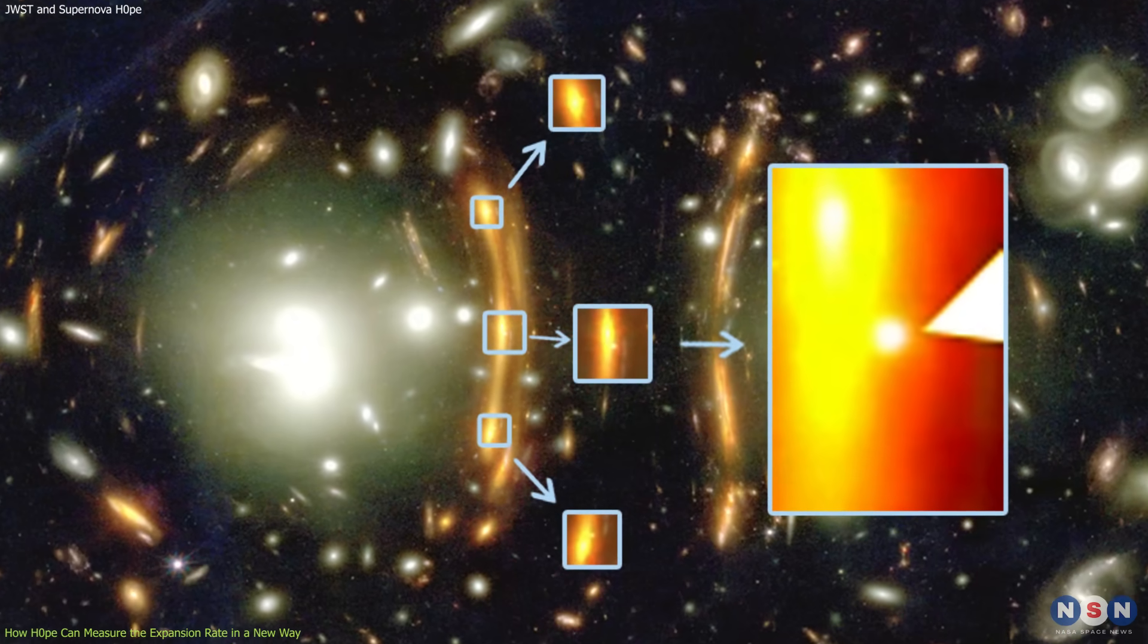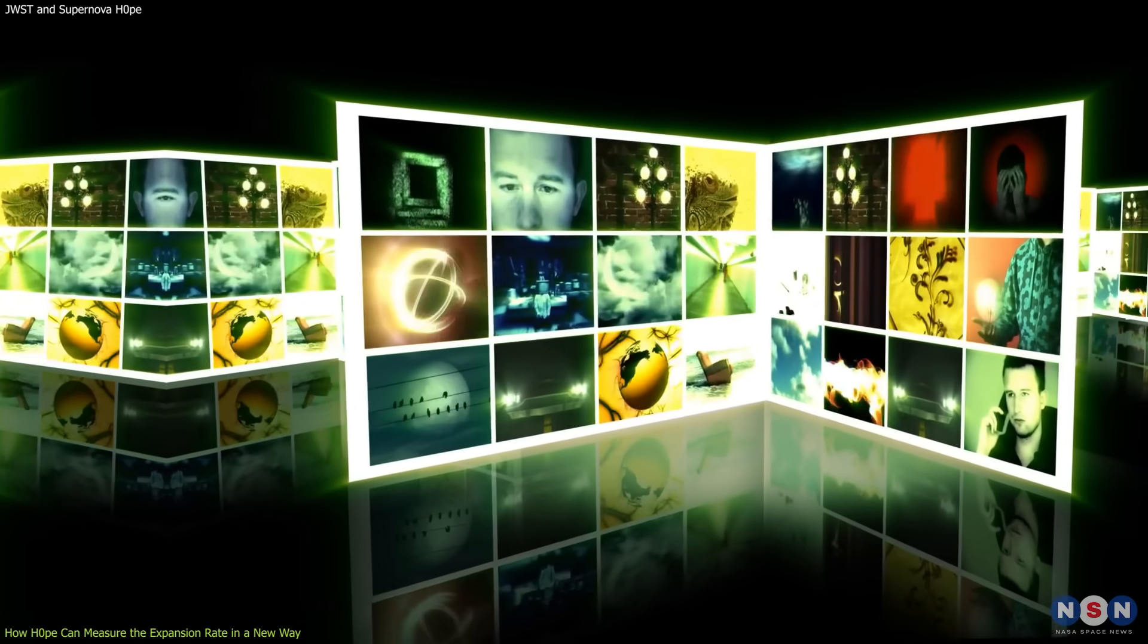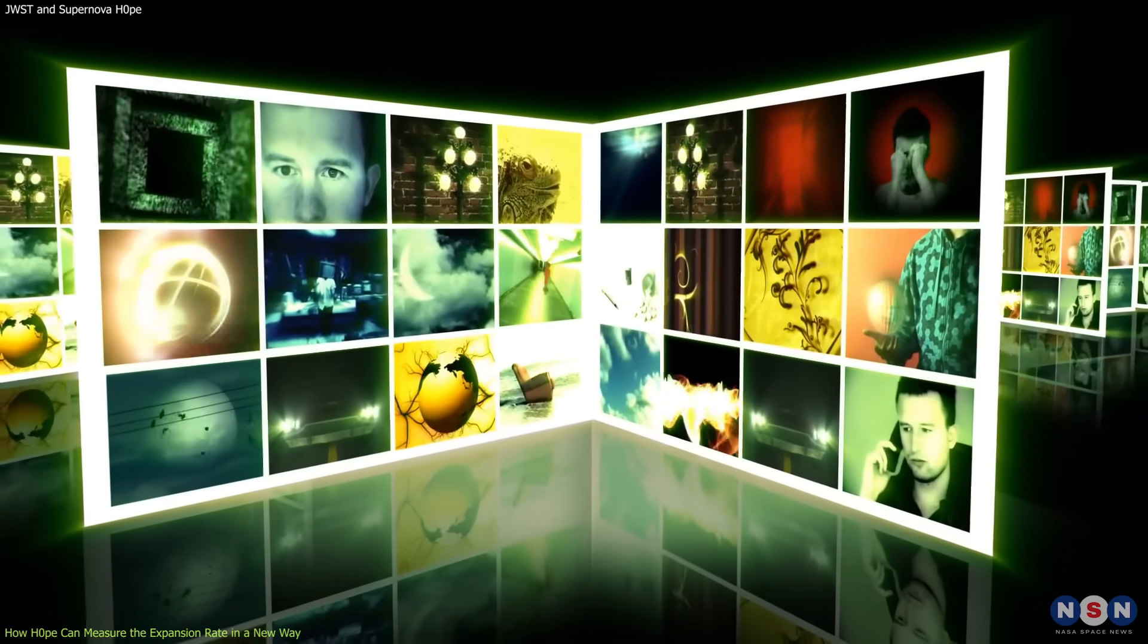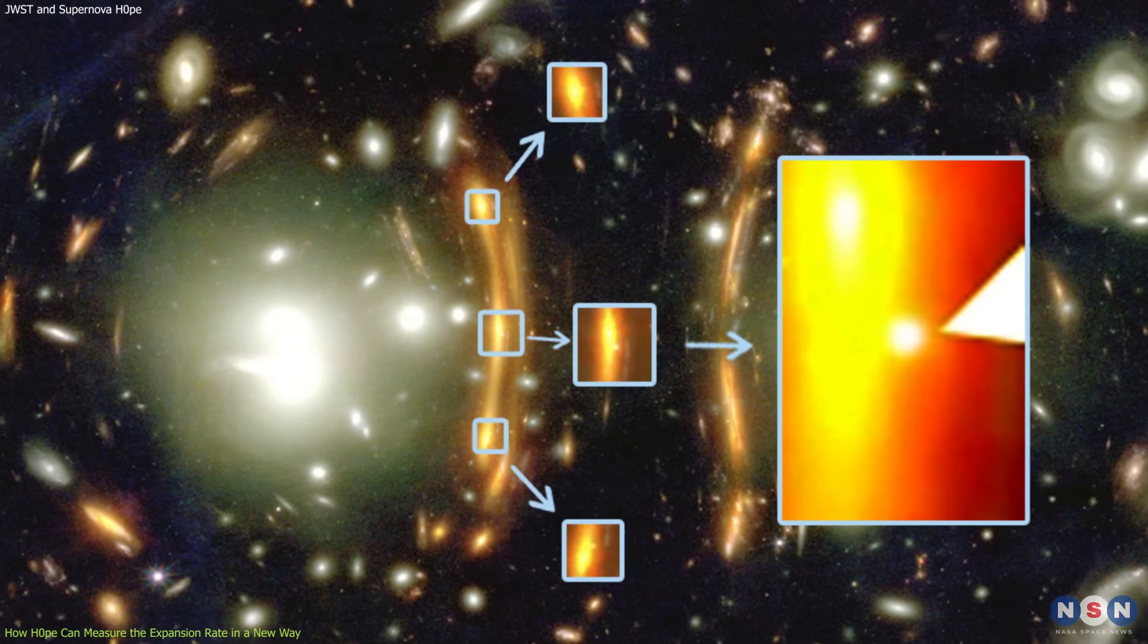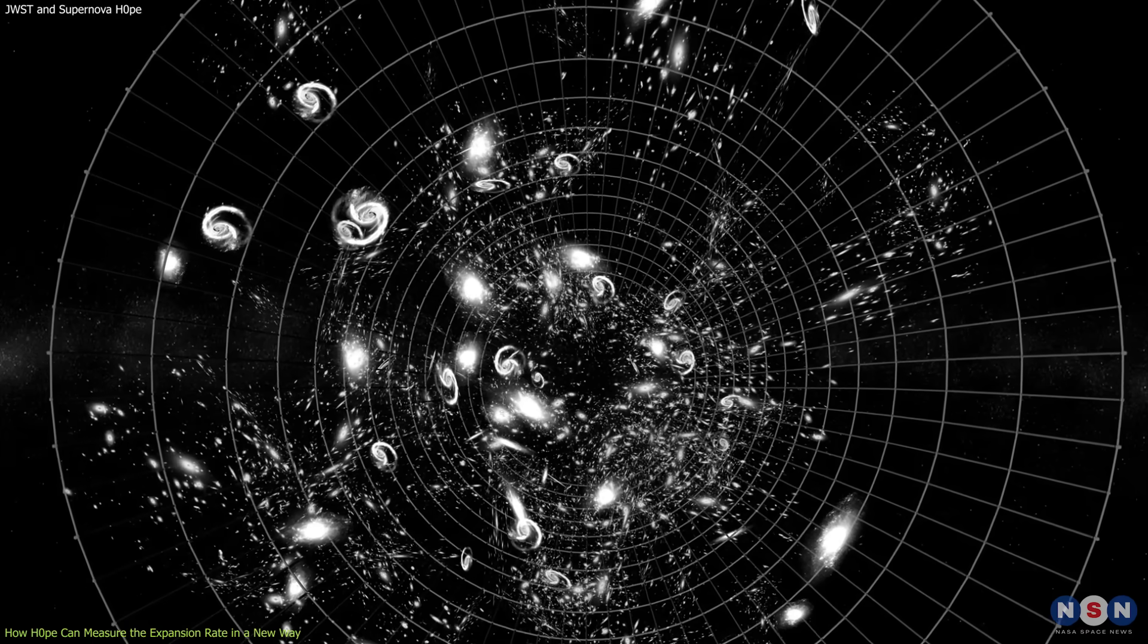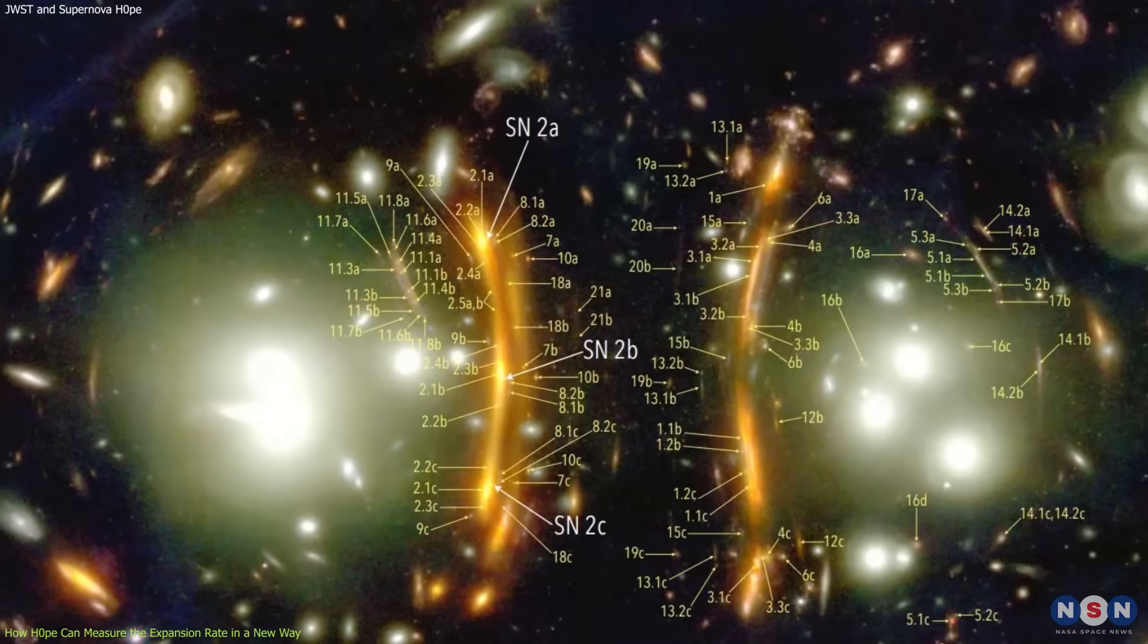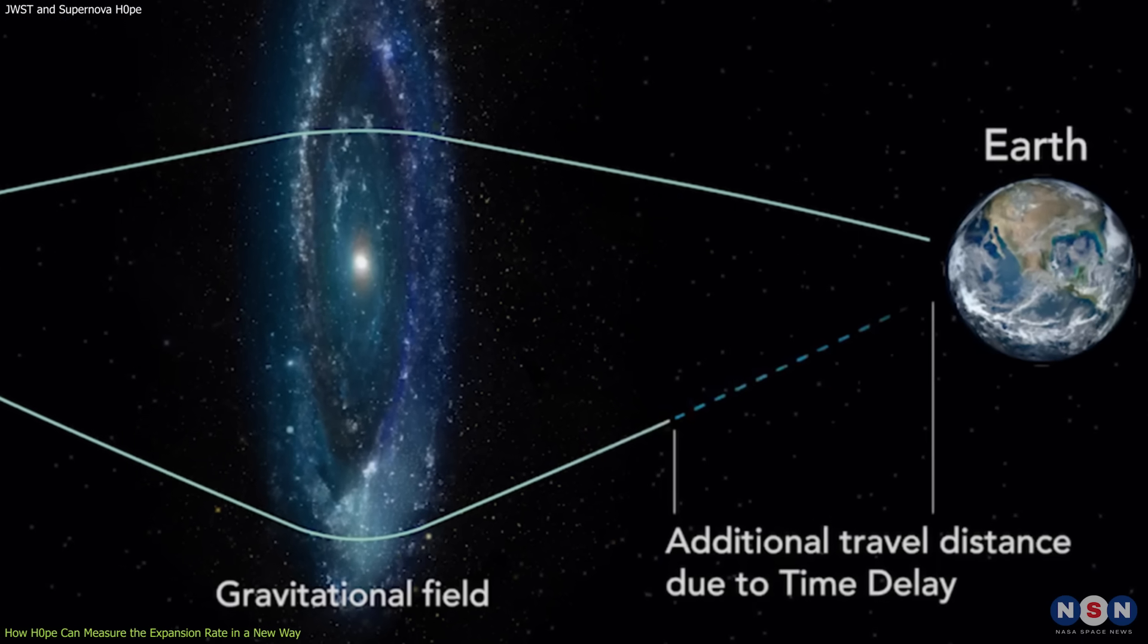This means that we see different images of the same source at different times, as if we were watching a movie with multiple screens that are not synchronized. By measuring this time delay between different images of the supernova, we can infer how much spacetime is warped by the galaxy cluster and how far away it is from us and from the supernova.